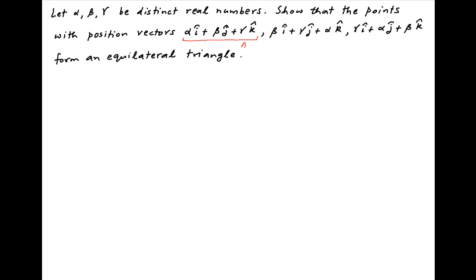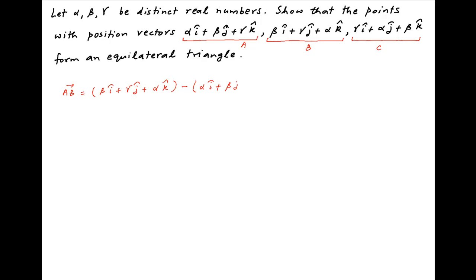Let's denote the three points by a, b, and c respectively. Therefore, vector ab, which is equal to the position vector of point b minus position vector of point a, is equal to beta i plus gamma j plus alpha k minus alpha i plus beta j plus gamma k. This is equal to beta minus alpha times i plus gamma minus beta times j plus alpha minus gamma times k.